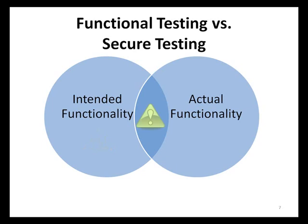The center section corresponds to application functionality that has been specified in the application designs and has also been implemented. Functional testing in this section can address a subset of security testing which focuses on the quality of security controls — for example, an evaluation of how well authentication controls were implemented. Again, since specifying security controls in application designs has been found to be rare in practice, functional testing performed here rarely identifies these types of issues.